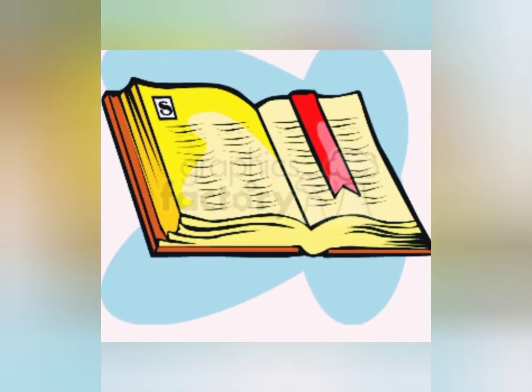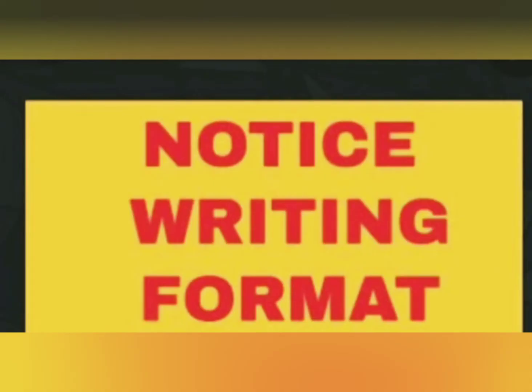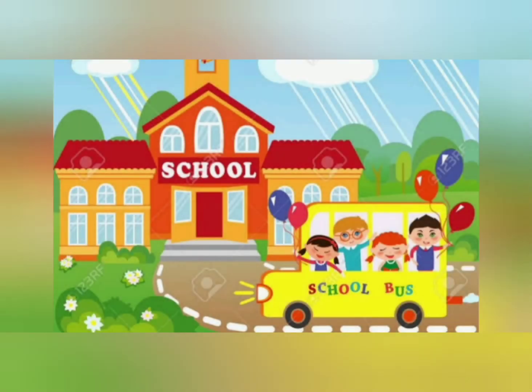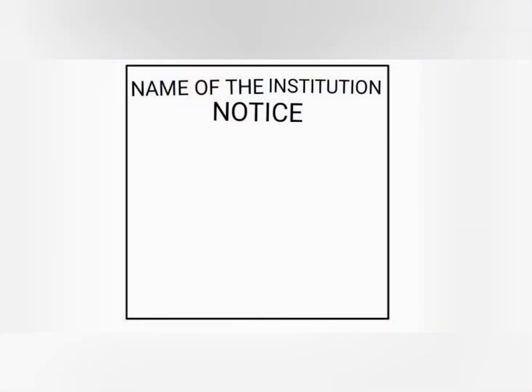Let's have a look at the format of a notice. First of all, draw a box. At the top of the box, write the name of the institution or organization that is issuing the notice. In the second line, just below the institution's name, write the word 'NOTICE' in capital letters. It will draw the attention of the reader.